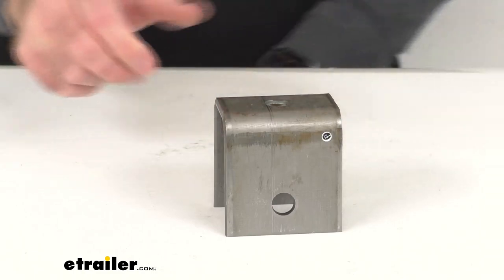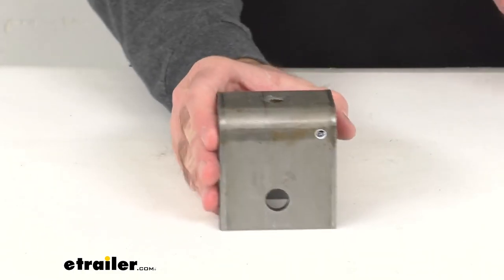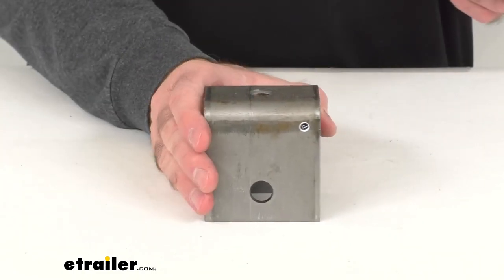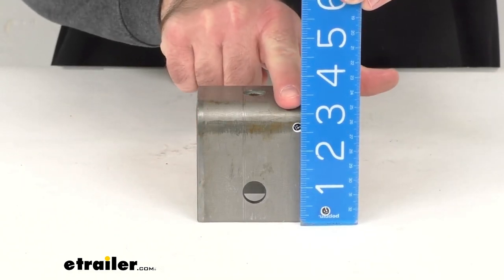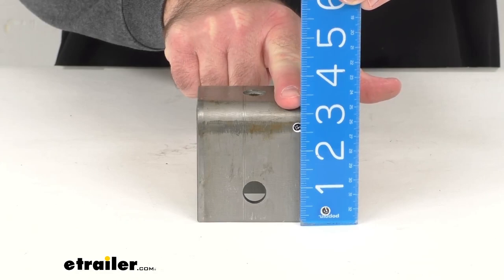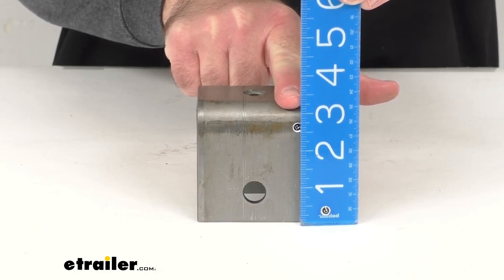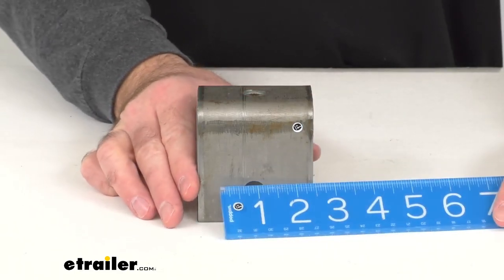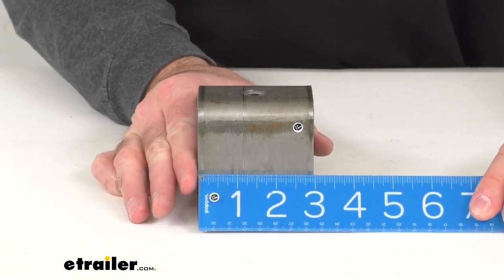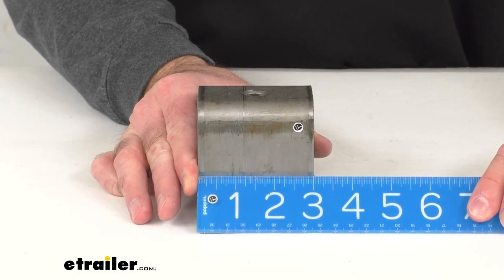Let me go ahead and just give you some overall measurements that I think will prove helpful for you. Looking at the overall height from top to bottom, we're sitting right at three and three sixteenths inches tall. The overall depth from edge to edge, we're sitting right at three inches deep.